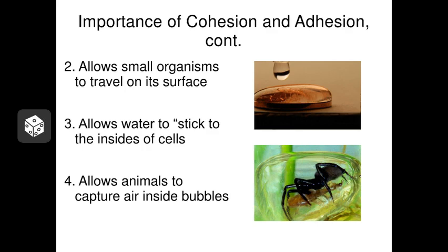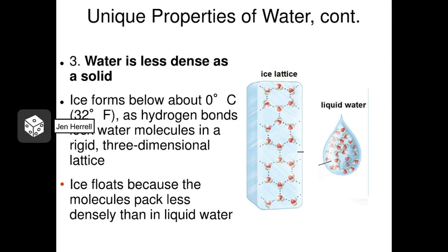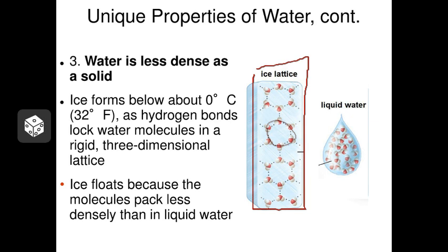Unique property number three, water is less dense as a solid. Now with most chemicals as they get close to the freezing point the molecules will actually pull closer together so it becomes denser and denser. Water though is very unique and this again relates to its ability to hydrogen bond. When it gets between one and zero Celsius getting really close to that freezing point the molecules actually begin to push each other apart a little bit. They won't get any closer than that hydrogen bond allows them to. So they push each other apart a little bit and that makes ice less dense than liquid water. Now what does that mean? Well that means that if you put some ice on some liquid water it will float because the ice is less dense.